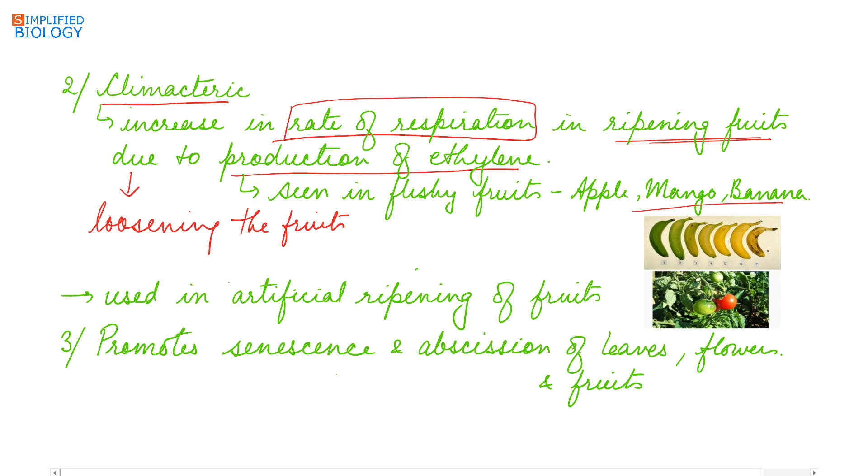When the fruits are stored, ripening of fruits can be prevented by removing the oxygen from the environment in which the fruits are stored, so that the respiration rate is not increased and the fruits can be stored for a longer time. Due to this, ethylene is used in artificial ripening of fruits.